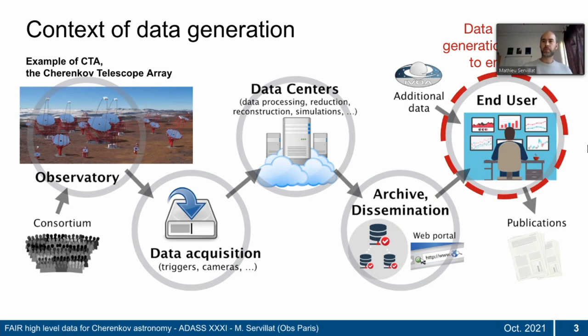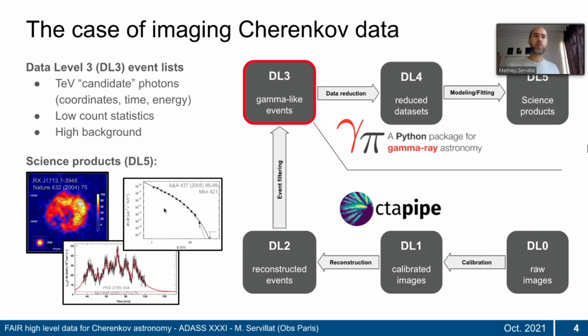When talking about Cherenkov data in particular, here is the cycle of this data. There are different data levels from the raw images calibrated, then the reconstruction of events. What we are talking about here are gamma-like events. This data level three is a list of tera-electron-volt, very high energy gamma rays — candidate photons — for which we get the coordinates, time and energy. It's very low count statistic; we don't have that many photons, and it's a high background. This is publicly available and can be reduced and adjusted for science purposes, leading to final results in a publication.